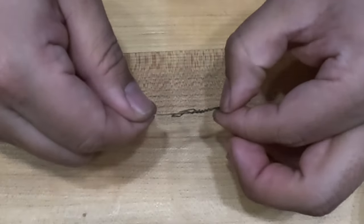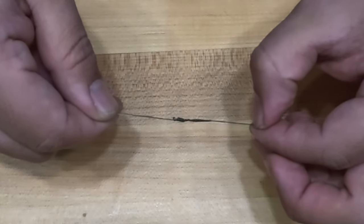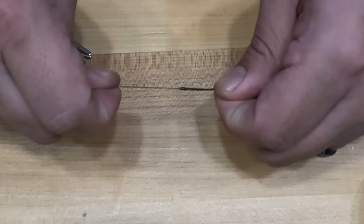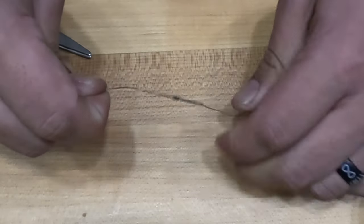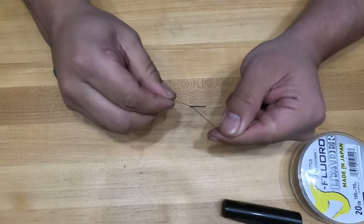Wet it and cinch down the tag end. It's important to do this slowly so that you don't burn any of the line, but also ensure that your knot lays perfectly on top of the Chinese finger trap that you've created. The final product should look something like this.